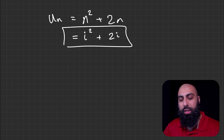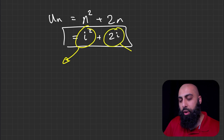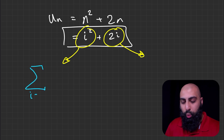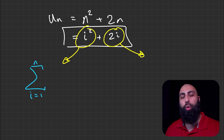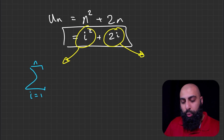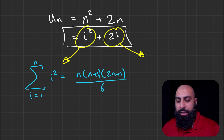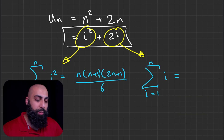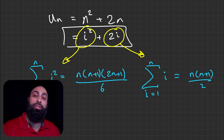There are two parts to consider: i squared and then i on its own. The summation formula for i squared, summed from 1 to n, is: n(n+1)(2n+1) all over 6. The formula for i, summed from 1 to n, is: n(n+1) all over 2. We need to add these two summations together — but note that because our sequence has 2i, we need to multiply the second formula by 2.